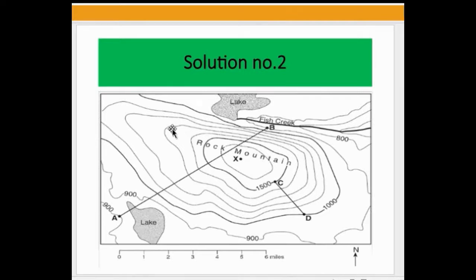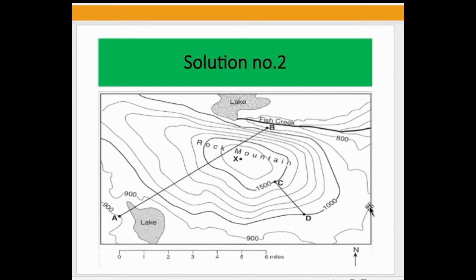In this second topographic map, there are also index contours and other contours — this one is 1500, this is 1000, and this is 800. As you can see, the contour lines here are tightly packed, indicating a very steep slope in this area. This other area has widely spaced contour lines, showing that it is a flat area. That is the thumb rule for finding a steeper slope in a topographic map.